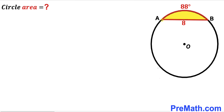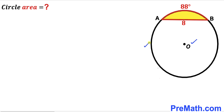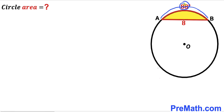In this video we have got this chord AB along with this subtended arc AB fully inscribed in a circle with a center O, as you can see in this given diagram, such that the length of this arc AB is 8 units whereas this arc AB is 88 degrees. Our task is to calculate the area of this circle.